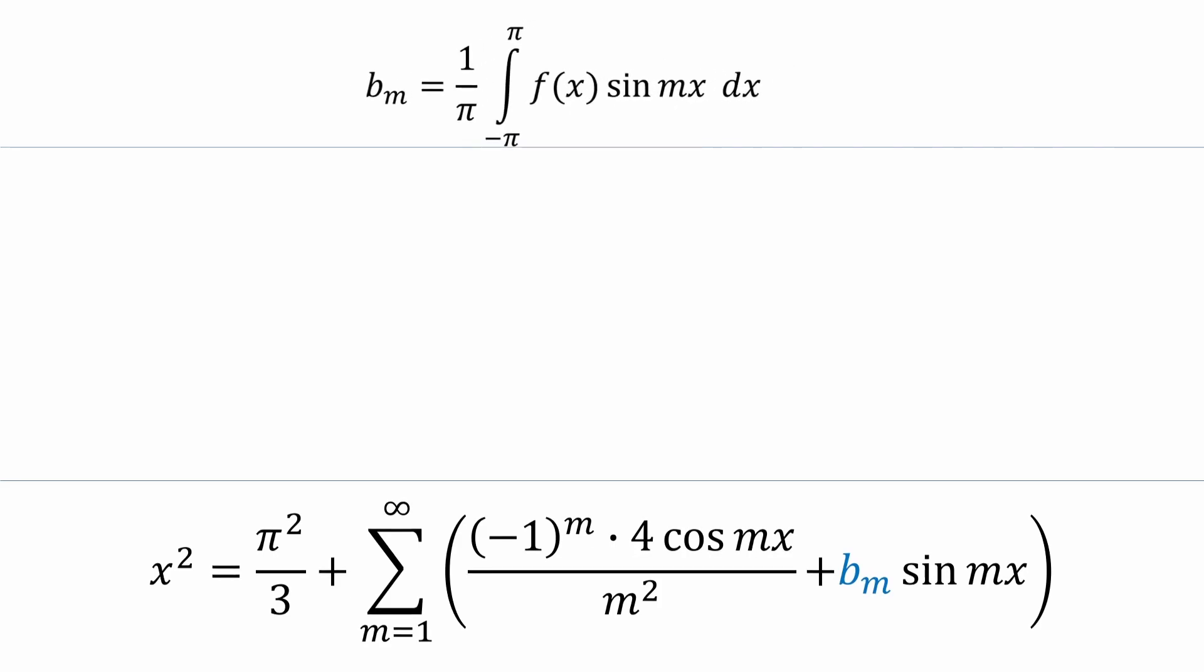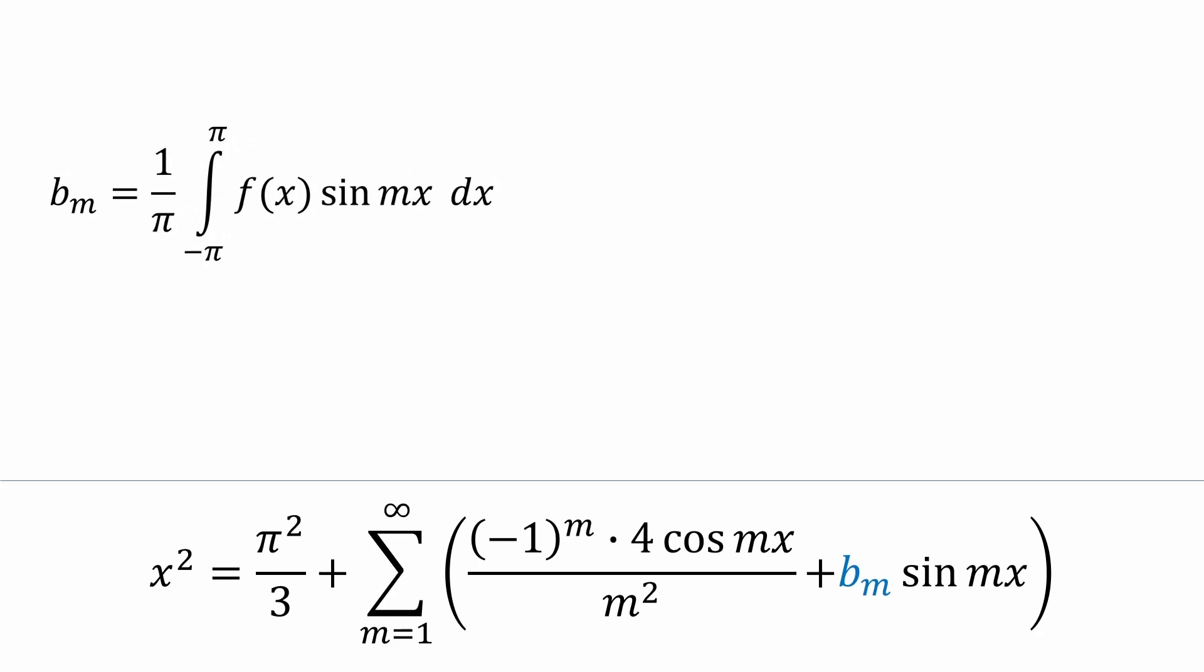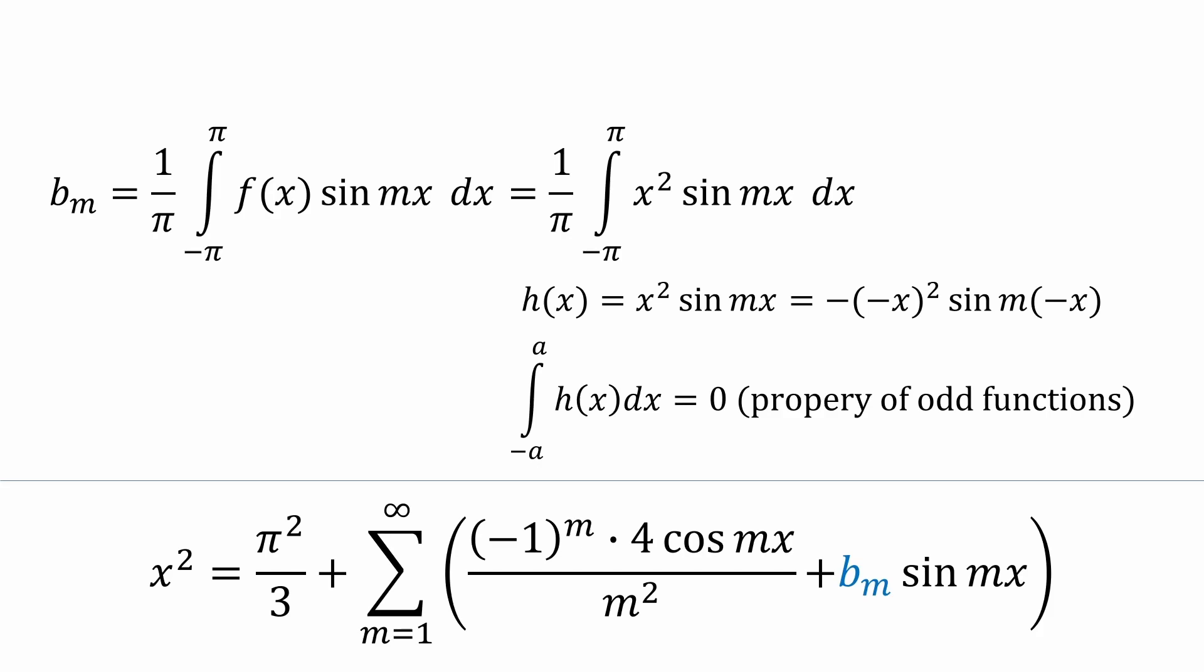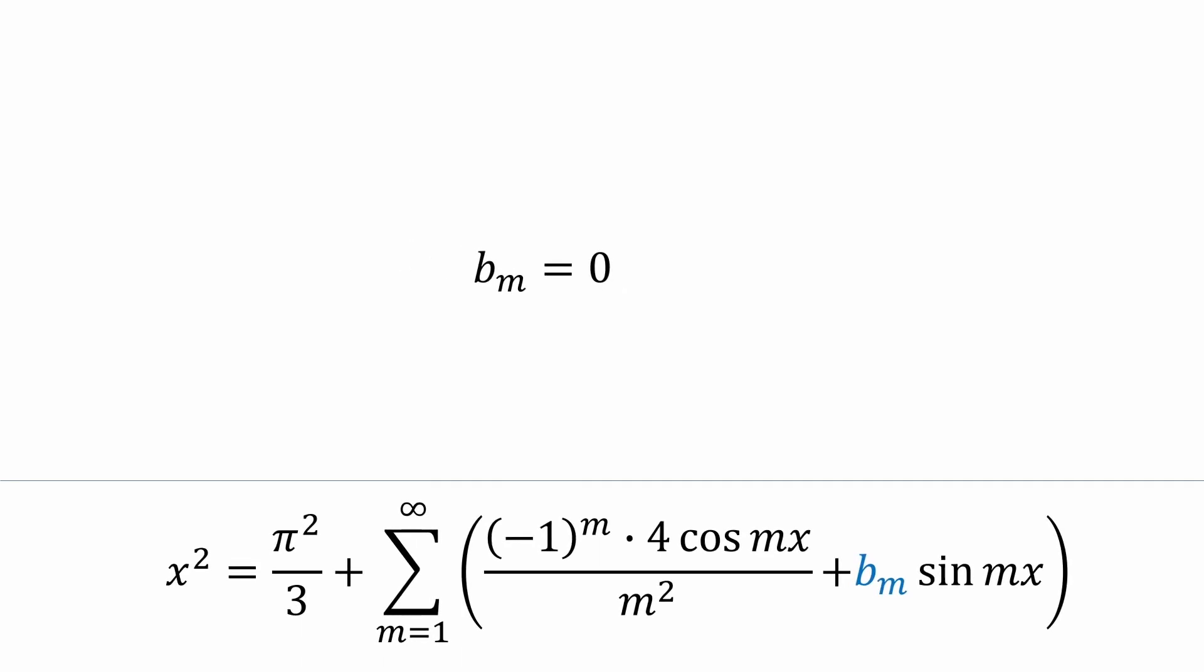One more coefficient is left: bₘ. We'll replace f of x with x squared, just like we've been doing. Now, before we jump into another integration by parts marathon, let's observe a nice property that x squared times sine mx enjoys. If we let h(x) equal x² sin mx, and if we then replace x with negative x and put a minus sign in front, we get back the same thing. We get back the original h(x). That means h(x) is odd. And that means the integral is equal to 0, since we're using limits of integration that are symmetric with respect to the origin. This is great news, and that little observation saved us a lot of unnecessary work.